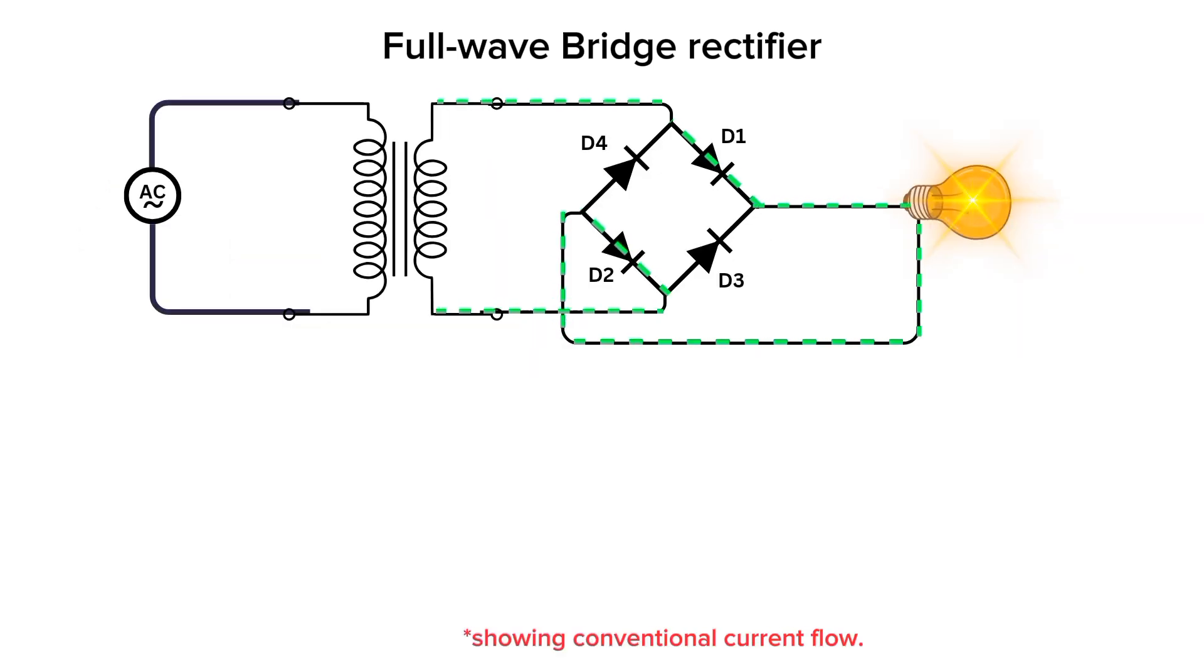During the positive half cycle of the AC input voltage, the diodes D1 and D2 are forward biased, conducting, while diodes D3 and D4 are reverse biased, non-conducting. This allows current to flow through the load in one direction from the transformer to the load.